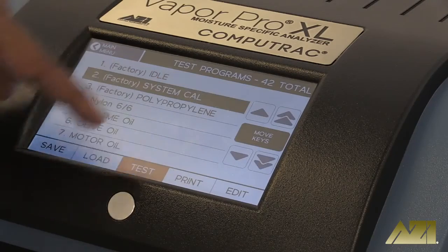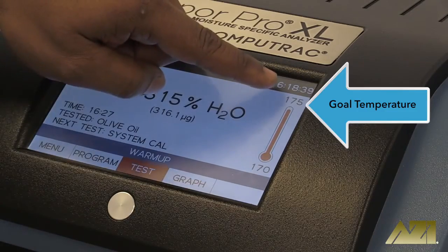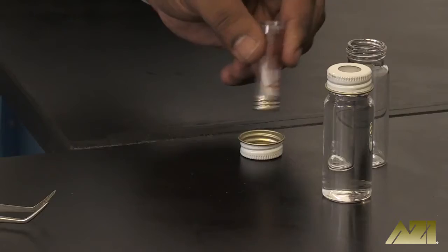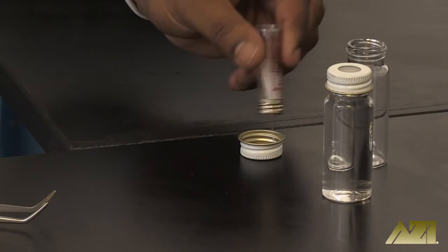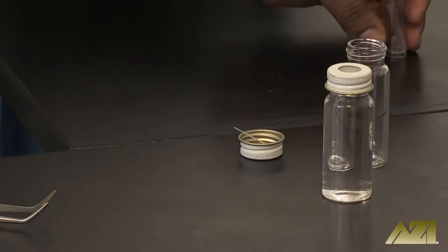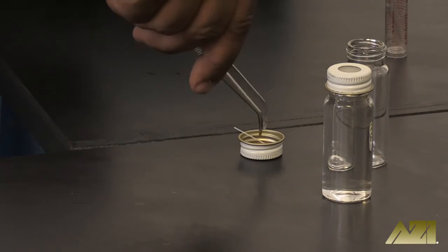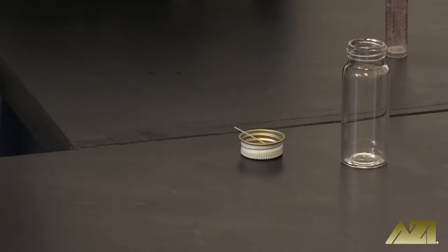Begin by tipping the tube of one microliter micro caps upside down and shaking gently until a single capillary comes out. Shake it out over the cap of the bottle you will use for the test to make it easier to pick up in the next step.